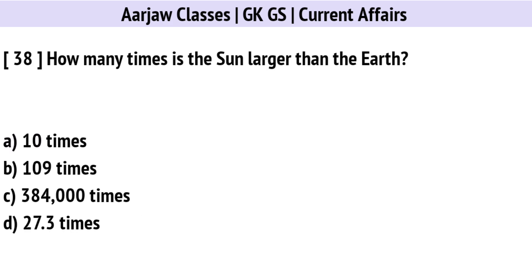How many times is the Sun larger than the Earth? Correct option is B: 109 times.